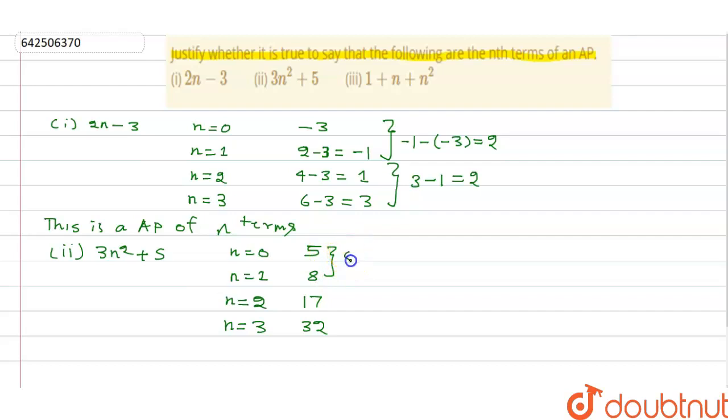Here, d is what, 8 minus 5, that is 3. And here d is what, 32 minus 17, that is 15. We can see these terms are not same, so we can say this is not an AP of n terms.